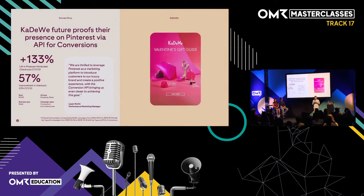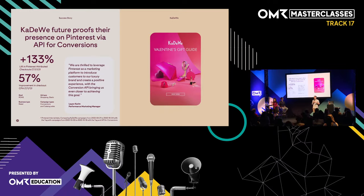Now let's show you a success case with real numbers. KDV wanted to future-proof their business — operating in a very privacy-sensitive market in Germany, they needed to implement the Conversion API. For their always-on strategies, they talked to our teams, we helped guide them through it, and implemented the Conversion API. The results speak for themselves: after implementing, they saw a lift in attributed checkouts for Pinterest of 133%, and an average improvement in checkout CPA of 57%. These are amazing results that the Conversion API for Pinterest can drive towards your business, in order to make the right decisions and evaluate the channel correctly.